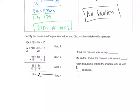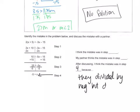Because they divided by a negative, but didn't flip the inequality symbol.